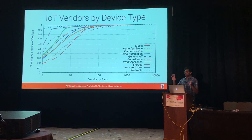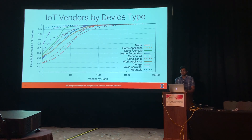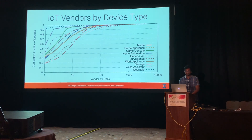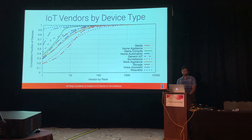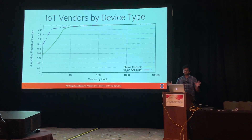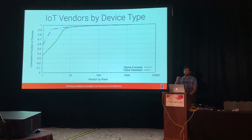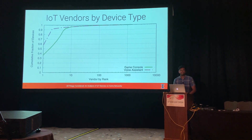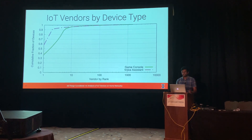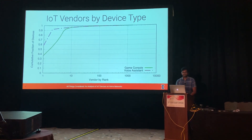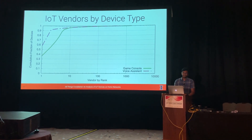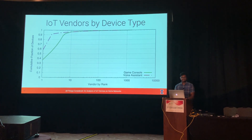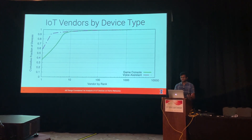However, although this holds in aggregate per region, the observation is not as neat when you look at vendors by device type. There is a split between different device types. Game consoles and voice assistants are largely dominated by a handful of vendors — just Google and Amazon make up more than 90% of the voice assistants in this study, and Sony, Nintendo, and Microsoft make up more than 90% of the game console market. So there are certain device types showing centralization in vendors.